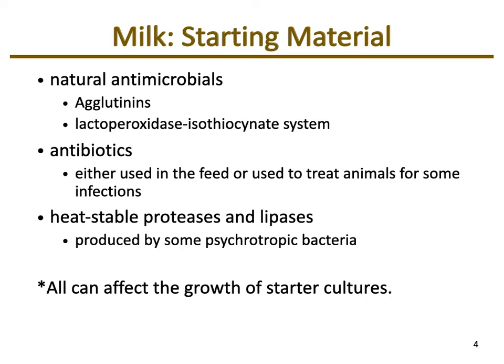There are also heat-stable proteases and lipases produced by psychrotrophic bacteria — those that survive at lower temperatures. These enzymes can break down proteins and lipids, changing the chemical composition of the raw milk starting material. Too many natural antimicrobials, antibiotics, or these heat-stable proteases and lipases would prevent our starting cultures from growing, which would affect the end product.